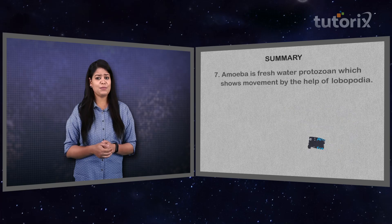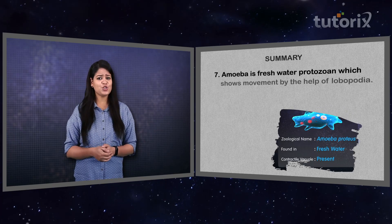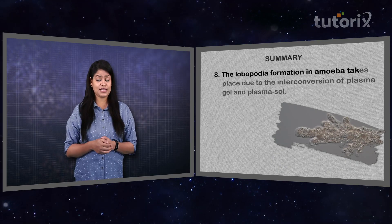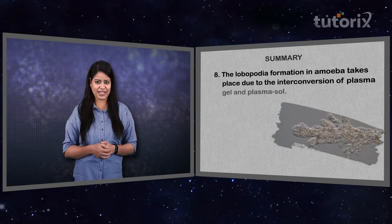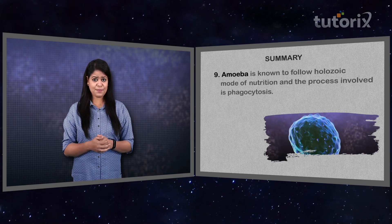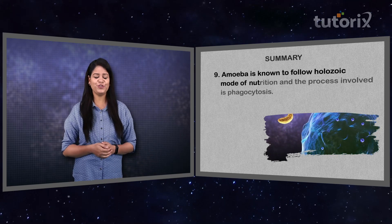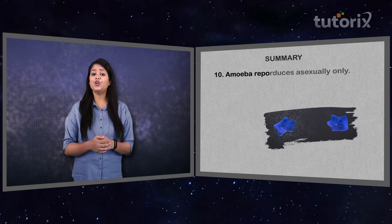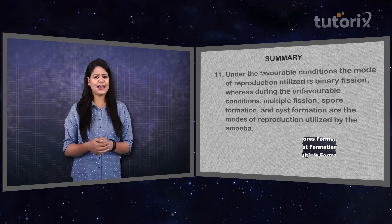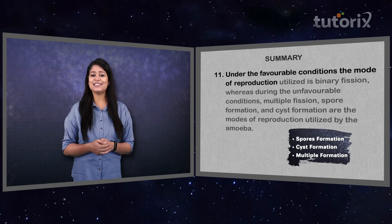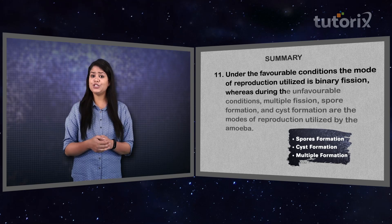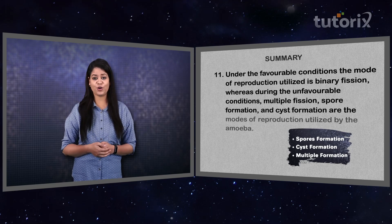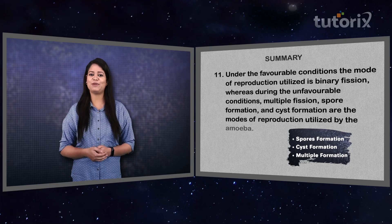Amoeba, giant amoeba, and Entamoeba are three important members of order Lobosa. Amoeba is a fresh-water protozoan that moves by lobopodia. Lobopodia formation occurs due to interconversion of plasma gel and plasma sol. Amoeba follows the holozoic mode of nutrition via phagocytosis. It reproduces asexually — by binary fission under favorable conditions, and by multiple fission, spore formation, and cyst formation under unfavorable conditions.